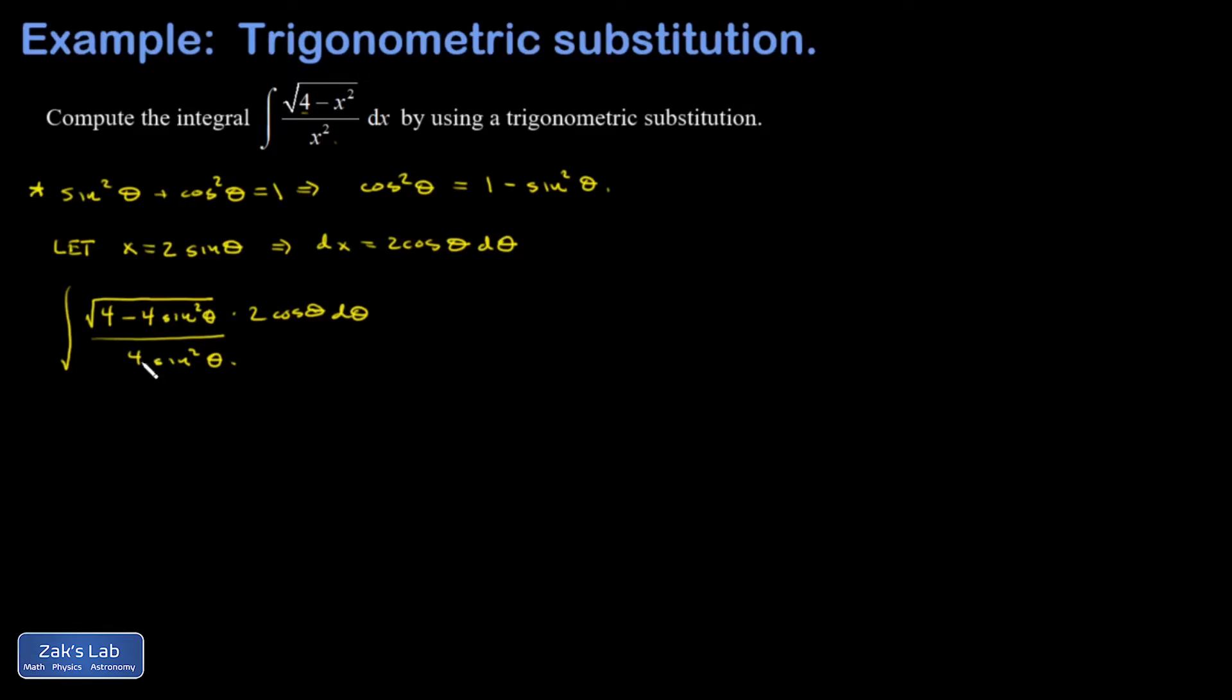We can pull a 4 out of the square root in the numerator, and that becomes a 2. But there's another 2 in the numerator, and there's a 4 in the denominator. So all of those constants cancel out. Inside the square root, I now have a 1 minus sine squared theta. And my whole point here was to get a cosine squared out of that and then square root it. So that becomes cosine theta.